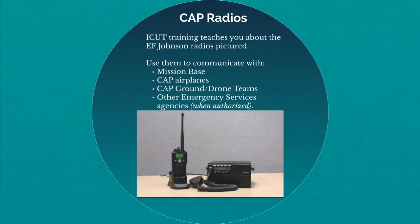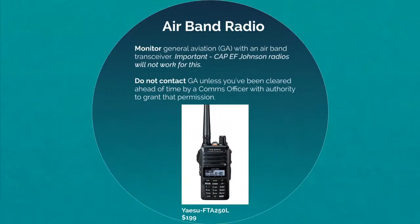The radios used inside CAP are the EF Johnson variety, with a handheld and mission base unit. You'll learn about them in ICUT training. You'll be contacting almost everyone using these radios. However, you can't use the EF Johnsons to monitor private or commercial general aviation, so if possible, secure an air band radio to monitor what those planes might be saying.